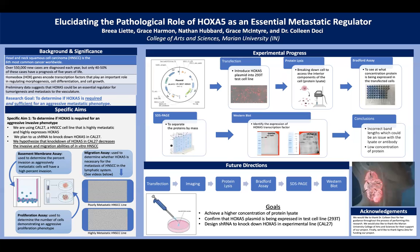After transfecting our cells, we wanted to determine that the transfection was successful. Using a control H2B mCherry plasmid, we were able to determine that the transfection was likely successful. If you look at the image in the transfection box, you'll see the red dots, which indicate that each of those cells was able to successfully take up the plasmid.